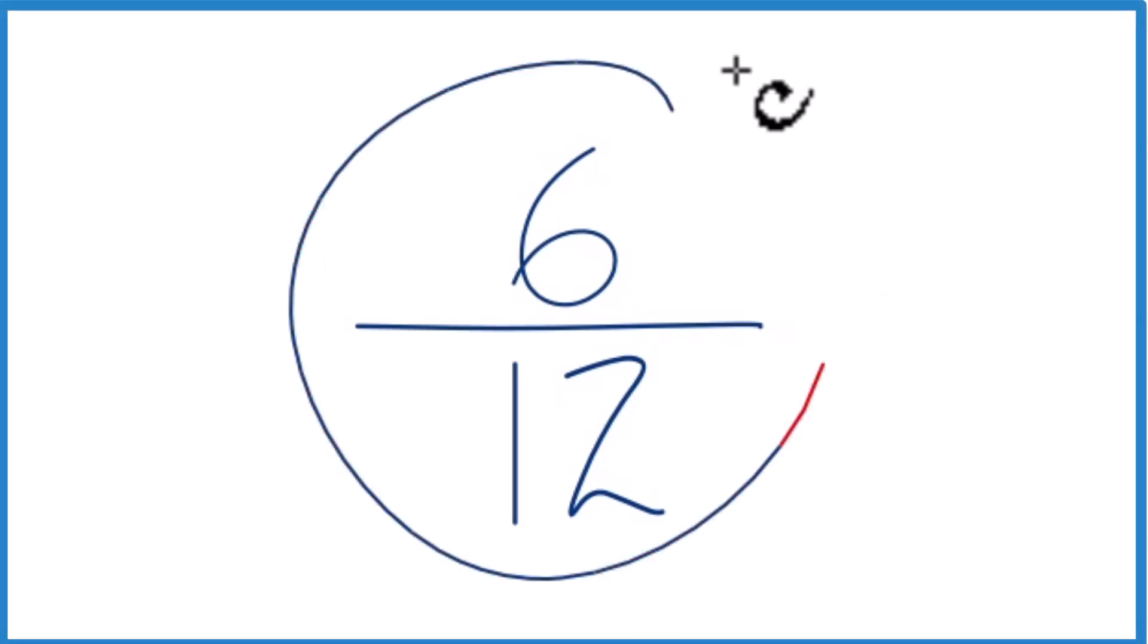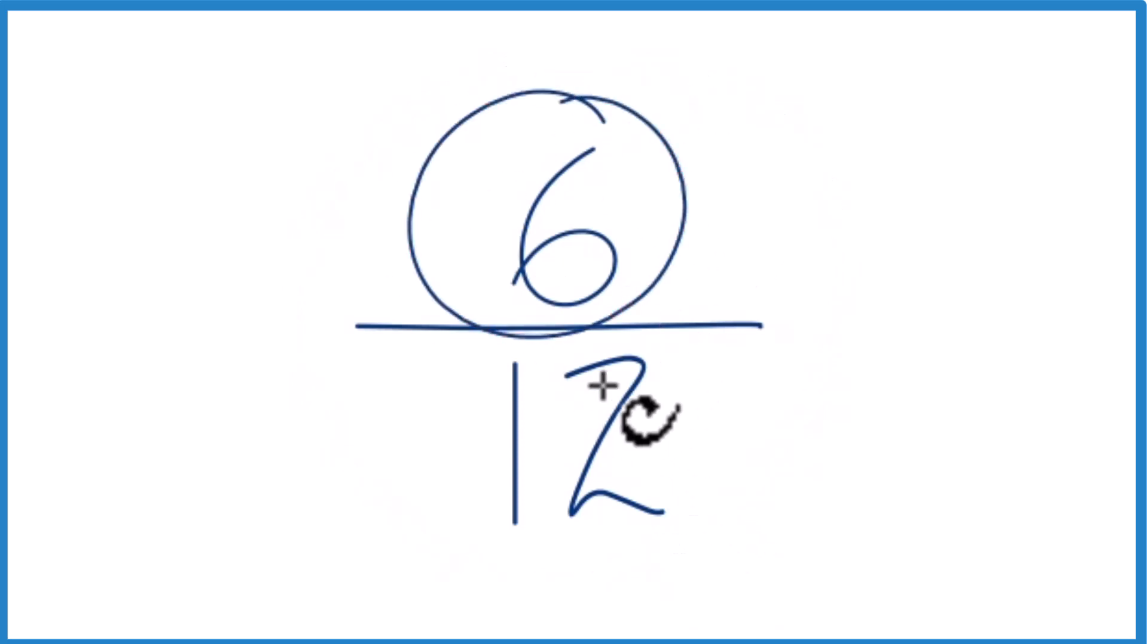If you need to write the fraction 6 twelfths as a decimal, here's how we do it. 6 is smaller than 12, so we know we're going to get a number less than 1 when we divide 6 by 12.